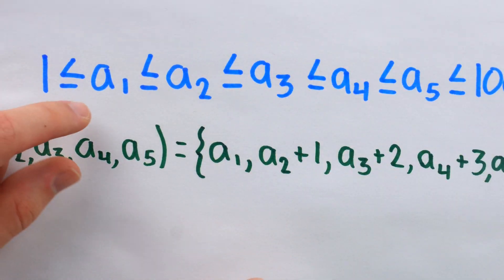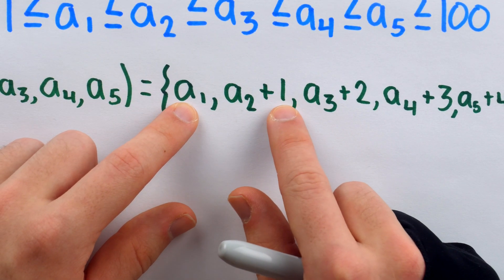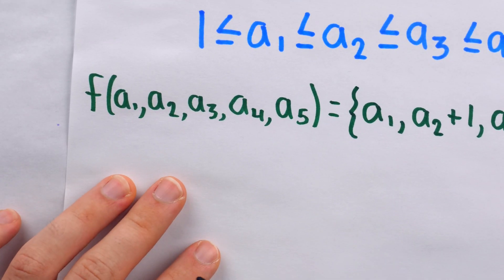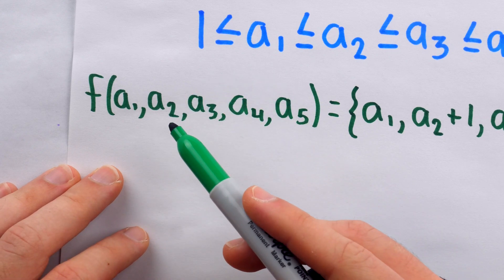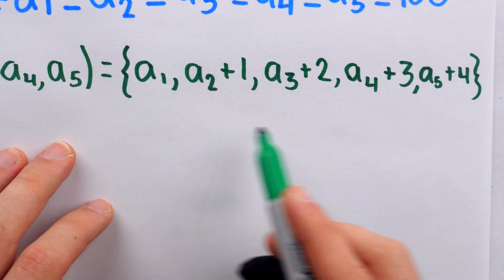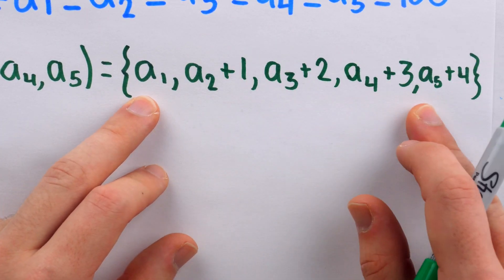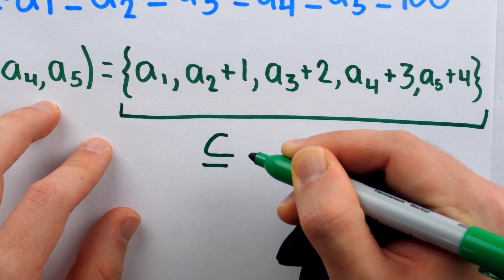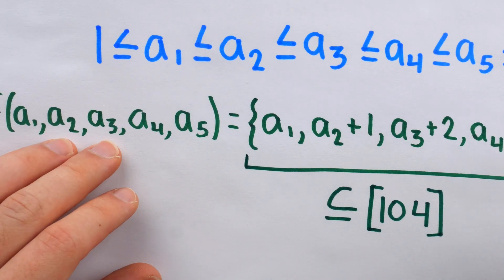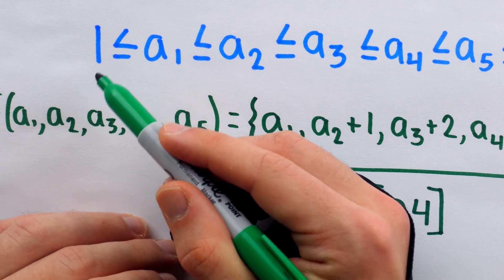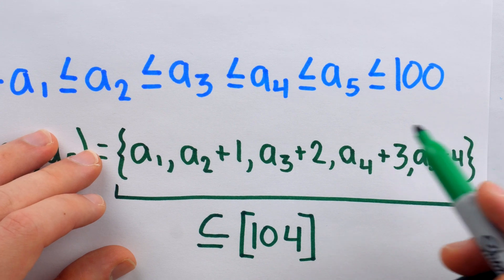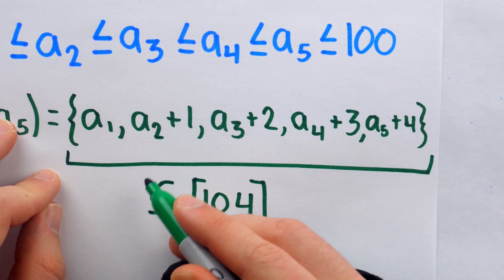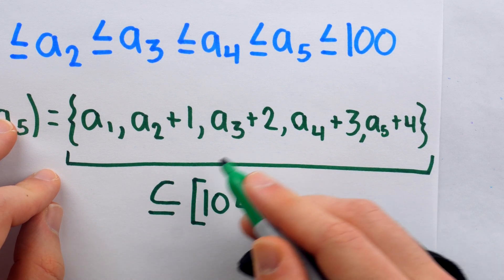So the image of our function takes a five-tuple representing a possible five-number combination for a lottery ticket and gives us a set of five distinct elements. Where does this output set live? It's a subset of the set containing all positive integers from 1 through 104, because the smallest lottery number is 1 and stays 1 through the function, while the biggest is 100 and could become as large as 104. So this set is a subset of the natural numbers from 1 through 104.